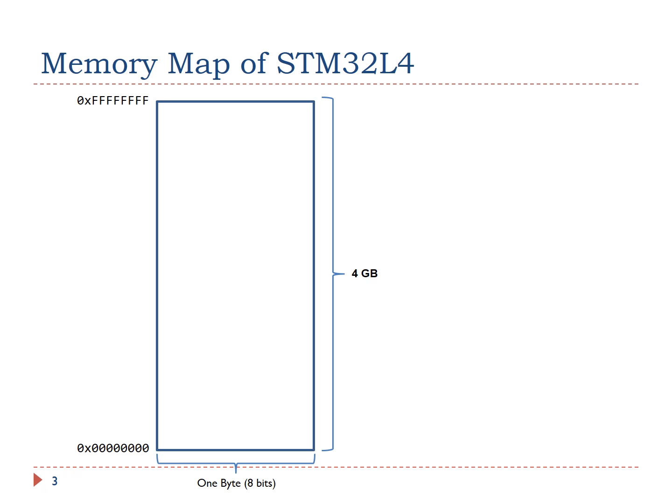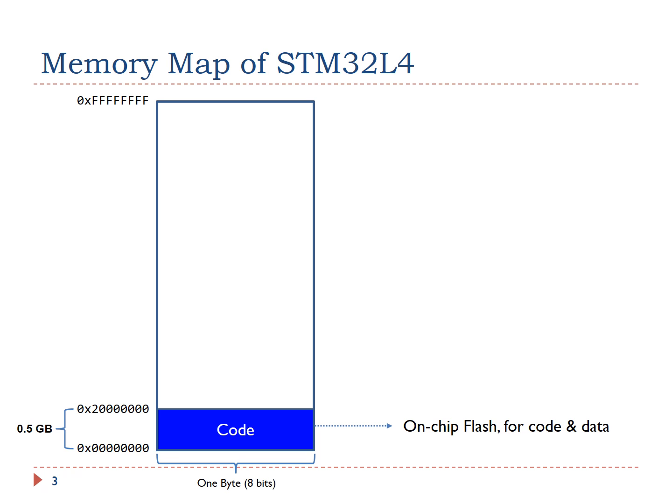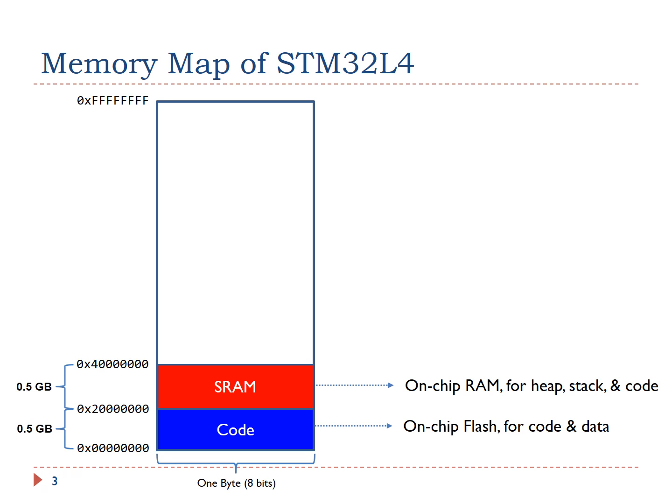The first region is the code region. It is primarily used to store program code, but it can also store data. The code region is on-chip memory, typically on-chip flash. The size of on-chip flash is limited to half a GB, and the actual size varies based on different vendors and chips. The second region is SRAM, primarily used to store data such as heaps and stacks. We can also put code here, and it supports half a GB.